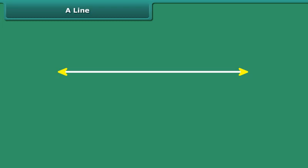You can represent a line by drawing a line over the two points representing it, for example, AB. Frequently, a line is also given by single letters such as L, M, N, etc.